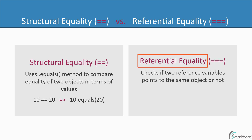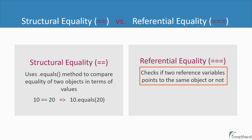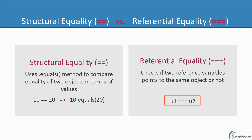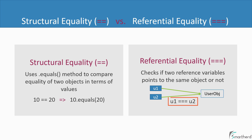Next is referential equality, which is represented by the triple equals symbol. In Kotlin, this operator is used to check if two reference variables point to the same object or not. For example, you can use u1 === u2, and this expression will check if u1 and u2 point to the same object. If they point to the same object, this expression will return true; otherwise, it will return false.